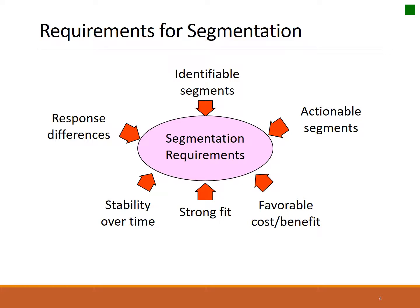There are six items here. We want to have identifiable segments, segments that we can take action with, ones that will lead to favorable profitability, ones that fit our corporate or business goals, segments that will stay in place over a period of time, and verifying that our segments are different from each other so that the response differences are really there.